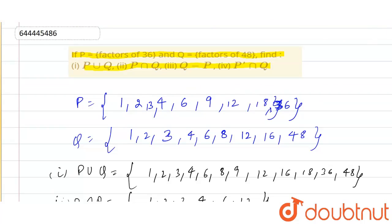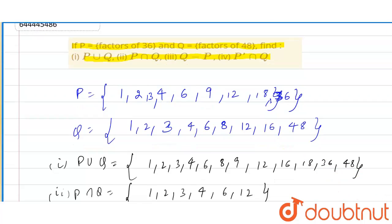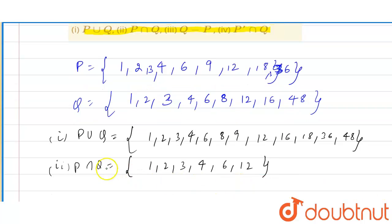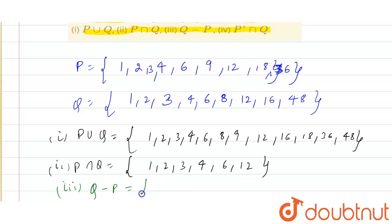The third part we have to find out is Q minus P. So if we subtract the elements, we get only 8, 16, and 48.